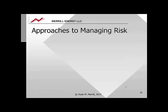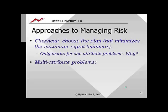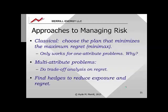Usually risk analysis results aren't so happy. A classical approach is to choose the plan that minimizes the maximum regret — called the minimax plan. The problem is this only works for single-attribute problems. If you have more than one attribute, the plan that minimizes maximum regret for cost of electricity may not be the same plan that minimizes maximum regret for SO2 emissions. For multiple objective problems, you do trade-off analysis on regret. And you look for hedges to reduce exposure and regret. In power system and strategic planning, hedges can be physical or other types, not necessarily financial.